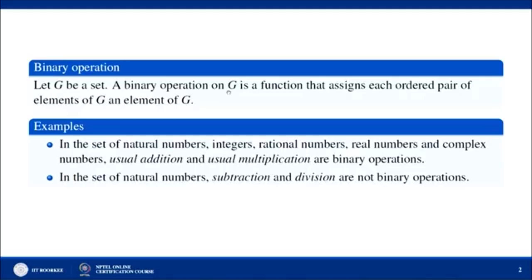Before stating what elementary row operations are, we first define binary operations. Let G be a set. A binary operation on G is a function that assigns to each ordered pair of elements of G an element of G. This means: take any two arbitrary elements in the set, apply the operation, and if the resulting element also belongs to the same set, then the operation is a binary operation.